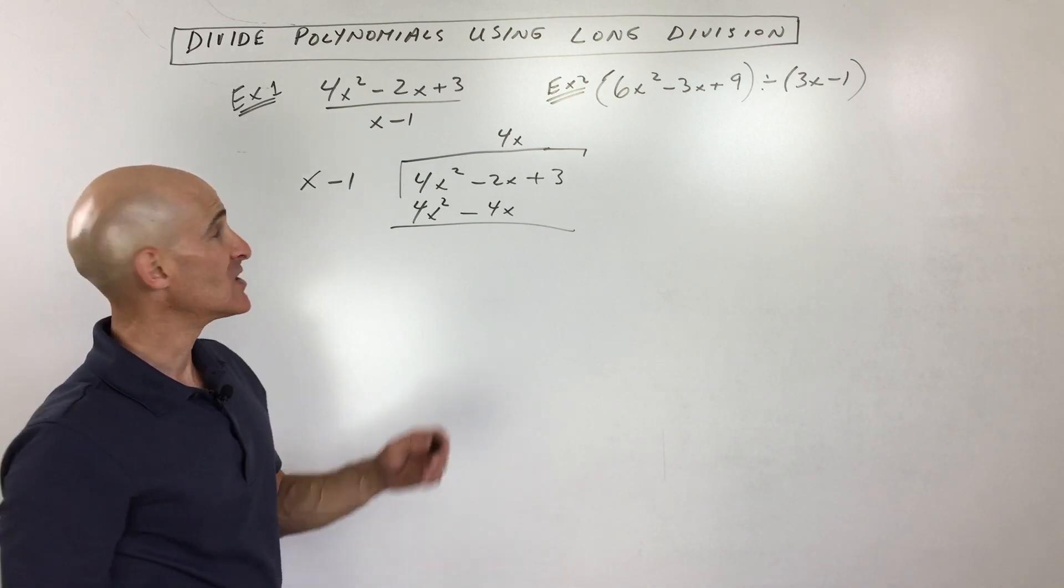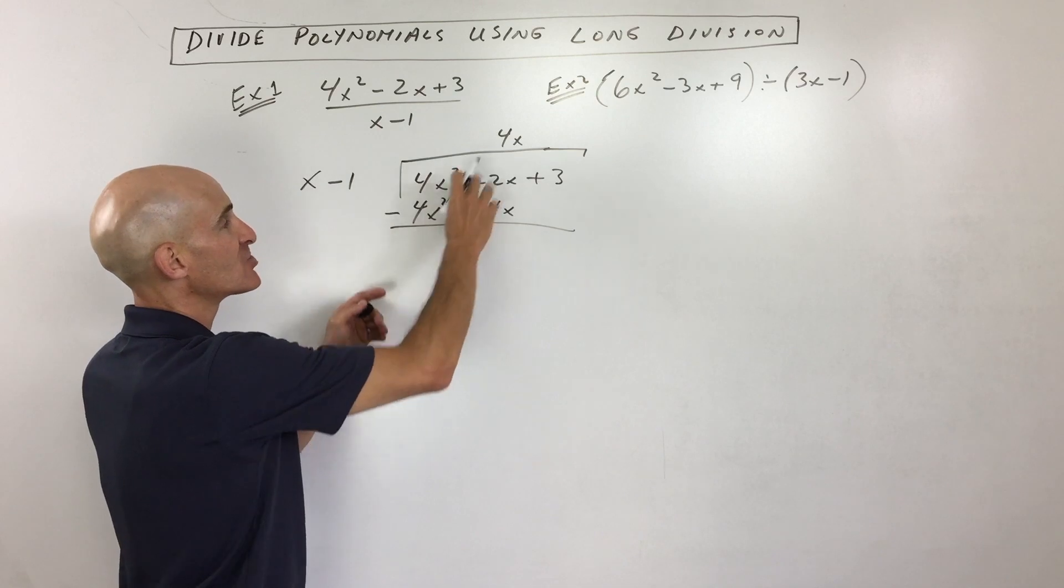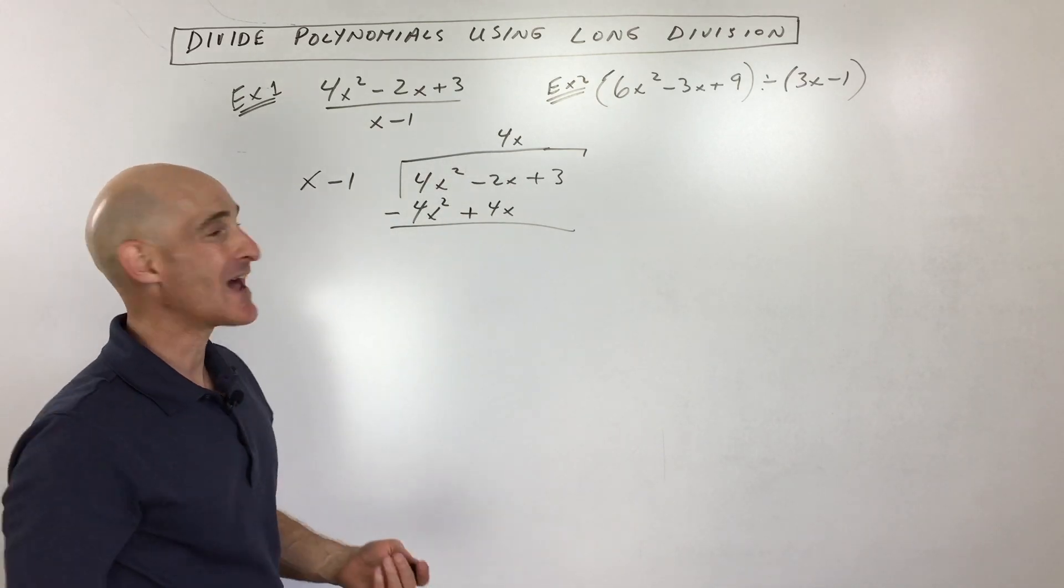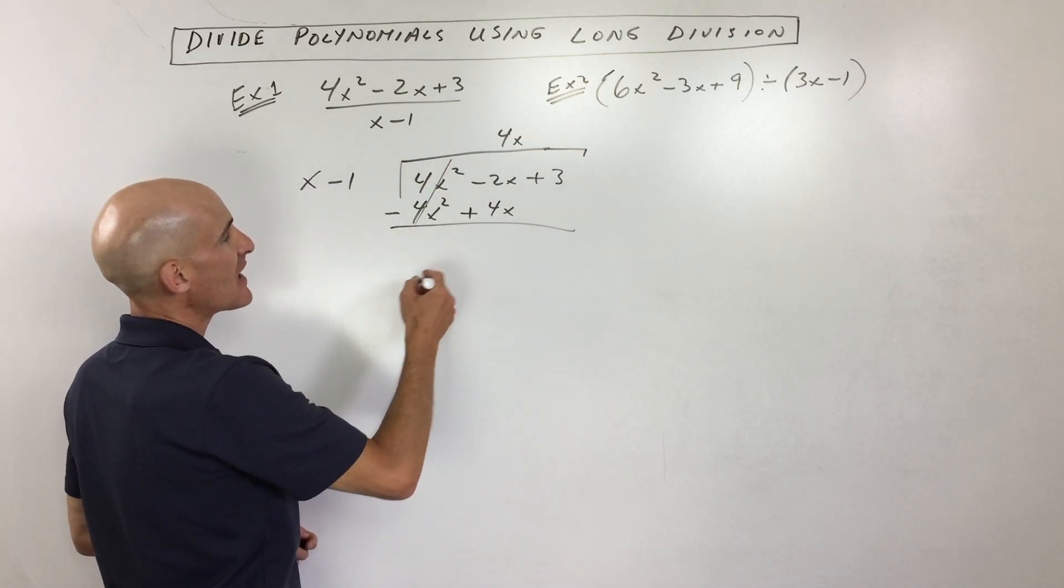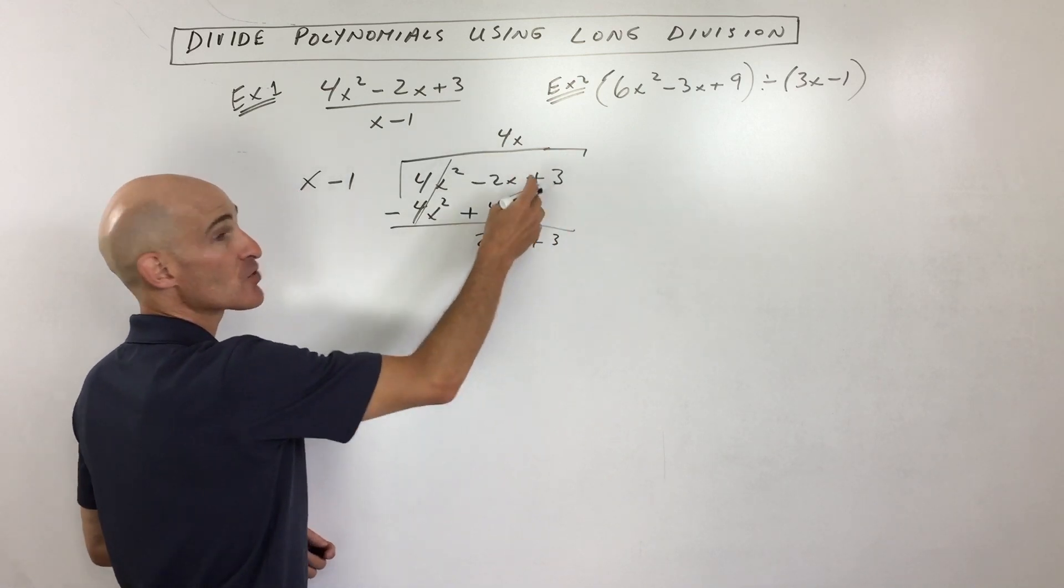But what a lot of students like to do is subtraction is really like adding the opposite. So if I change these signs to the opposite and just add straight down, that oftentimes is a lot easier. You can see these are canceling. We get 2x plus 3. So I'm just adding straight down.